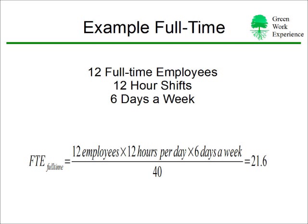With the following examples, we are going to calculate a full building's FTE value. In this first example, we're using 12 full-time employees working 12-hour shifts, 6 days a week. We calculate that out and it comes to 21.6. A conservative approach would be to round this up to 22 for the FTE value of full-time employees.